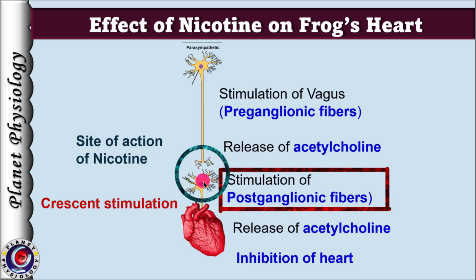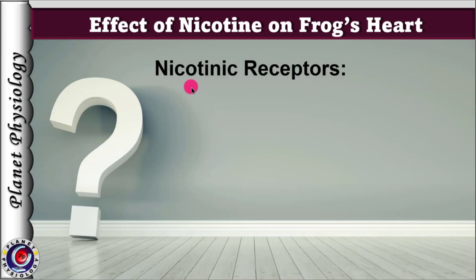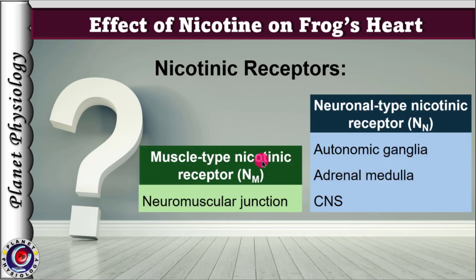Before we discuss the mechanism of action of nicotine further, recall on which receptors nicotine acts and where they are found. Nicotine acts on nicotinic receptors, which are of two types: muscle type (NM) and neuronal type. Muscle type nicotinic receptors are found at the motor end plate, whereas neuronal type nicotinic receptors are present in the autonomic ganglia, adrenal medulla and central nervous system.